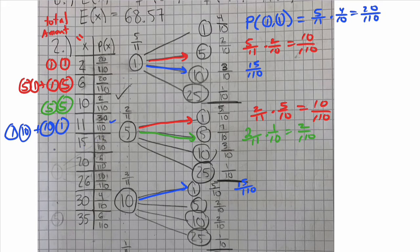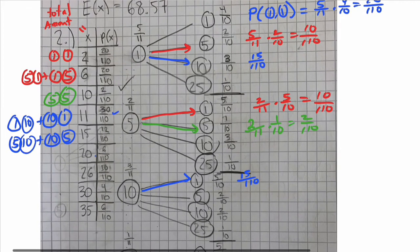And we just continue this process. Fifteen is a ten plus a five, or a five plus a ten. And we get those probabilities using our tree diagram over here. We get 12 out of 110. And here, 20 cents, that's only if you've got ten cents and ten cents. So that's only one branch here. That is three-elevenths times two-tenths is six out of 110.